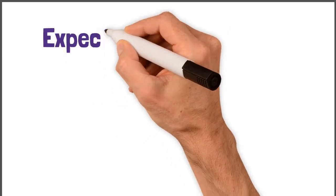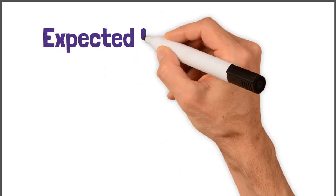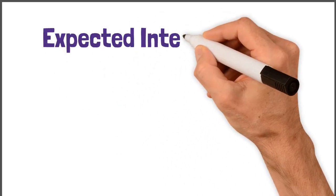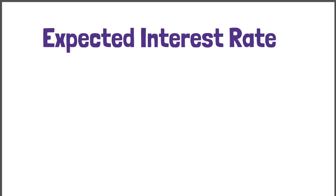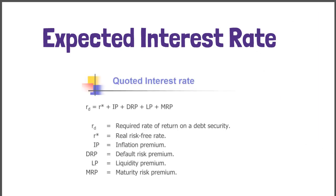In this video we will show how the expected interest rate is calculated. We know that the quoted or nominal interest rate on a debt security is composed of a real risk-free rate plus several premiums that reflect inflation risk, default risk, liquidity risk, and maturity risk.